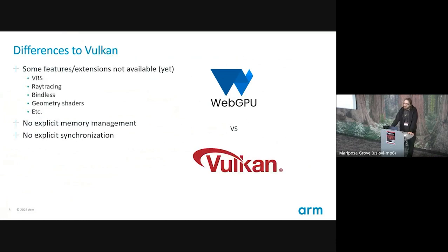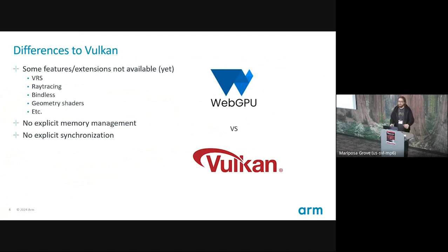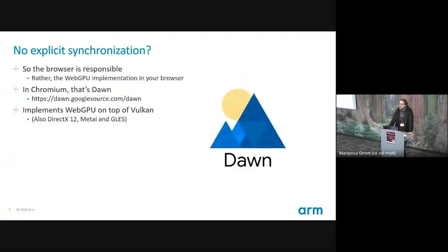But WebGPU is not simply Vulkan on the web. There are some differences. First of all, there are lots of differences in features and extensions available in Vulkan that you don't get in WebGPU, like VRS, ray tracing, bind list, geometry shaders — the list goes on. This may change in the future as the API matures. Hopefully, geometry shaders stay out. Unlike in Vulkan, there is no explicit memory management. And importantly for this talk, there is no explicit synchronization. You just submit your commands and it all just kind of works out. No pipeline barriers, no events, no semaphores, no fences. But, of course, it doesn't work by magic. If you don't have to care about synchronization, someone else has to. And in the case of WebGPU, that someone else is the browser you're running in, or more specifically, the WebGPU implementation that your browser uses. In the case of Chromium, that implementation is called Dawn.